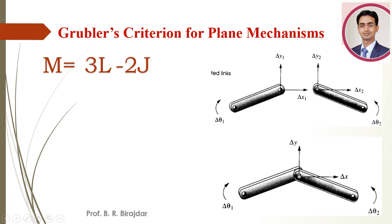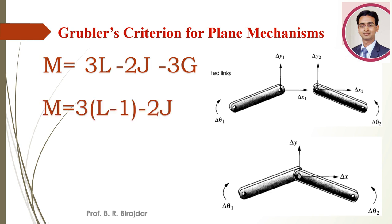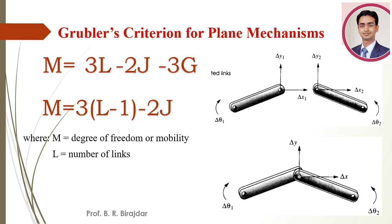For each joint, two degrees of freedom vanish, giving minus two-J. Additionally, we must ground one of the links to make it a mechanism, which removes three degrees of freedom. Since the grounded link count G is always one, we subtract three. Rearranging gives: M = 3(L − 1) − 2J, where M is the degrees of freedom or mobility, L is the number of links, and J is the number of joints.